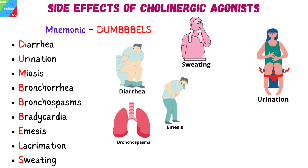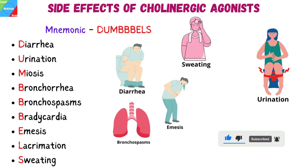D stands for diarrhea, U for urination, M for miosis, the first B for bronchorrhea, the second B for bronchospasms, the third B for bradycardia, E for emesis, L for lacrimation, and S for sweating.